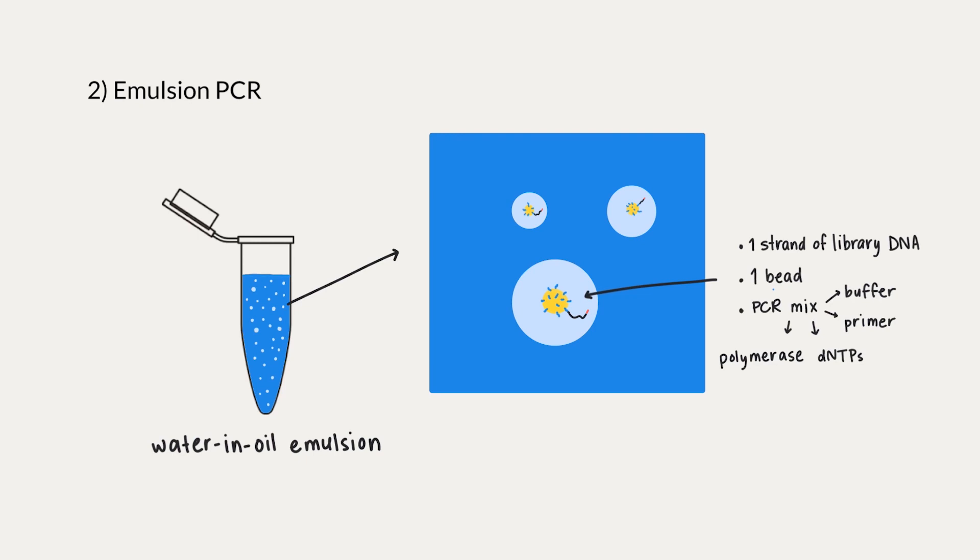Then we add oil. After all, this is an emulsion, which means that we have two liquids that aren't miscible, and this creates microvesicles so small that they can only hold one bead per vesicle, like you see here.